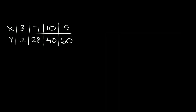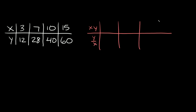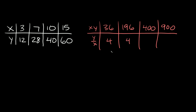Here's the second table. Again, we make a new table with products on top and ratios on the bottom. Multiplying: 3 times 12 is 36; 7 times 28 is 196; 10 times 40 is 400; 15 times 60 is 900. Now dividing y by x: 12 divided by 3 is 4; 28 divided by 7 is 4; 40 divided by 10 is 4; and 60 divided by 15 is 4.